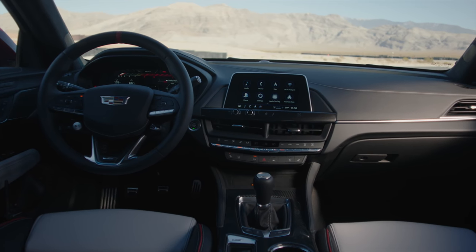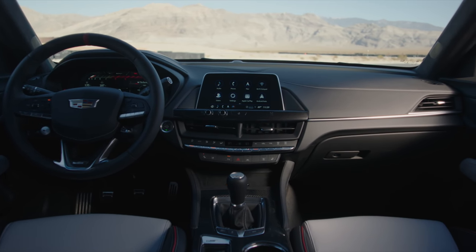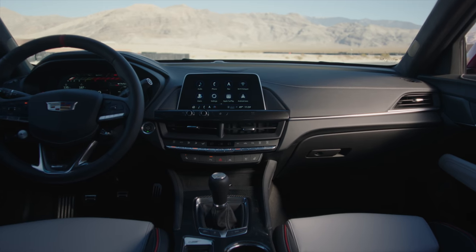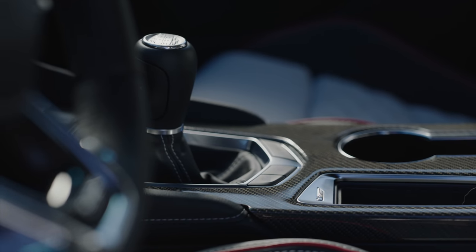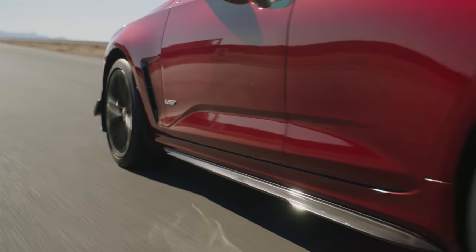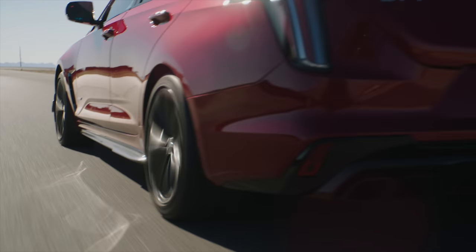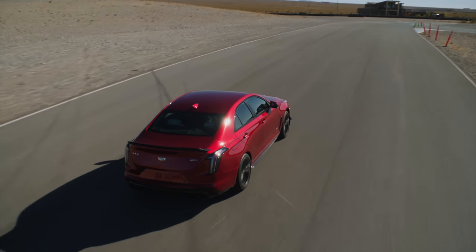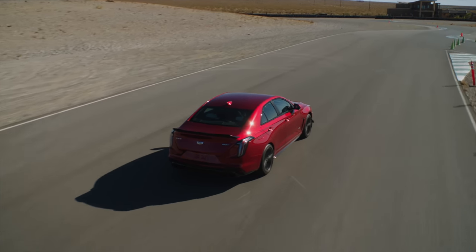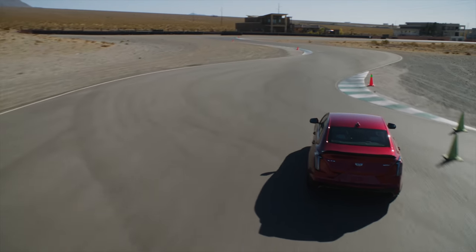Now, very exciting to me, both the CT4V Blackwing and the CT5V Blackwing are coming standard with six speed manual transmissions. How cool is that? Real world drive, tons of power, manual transmission. I love it. They're coming with rev matching, flat foot shifting, which they say for the CT4V, which has a twin turbocharged engine, helps it maintain boost through that shift.